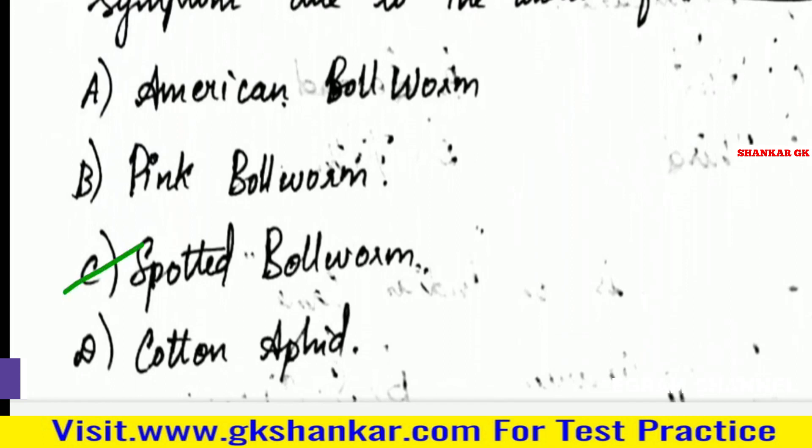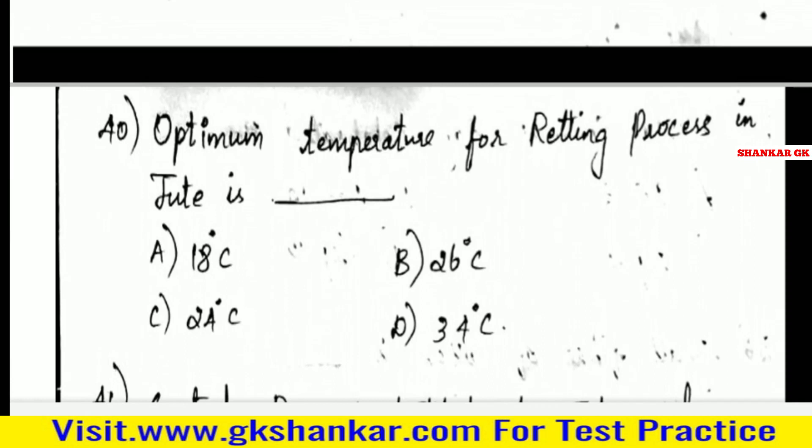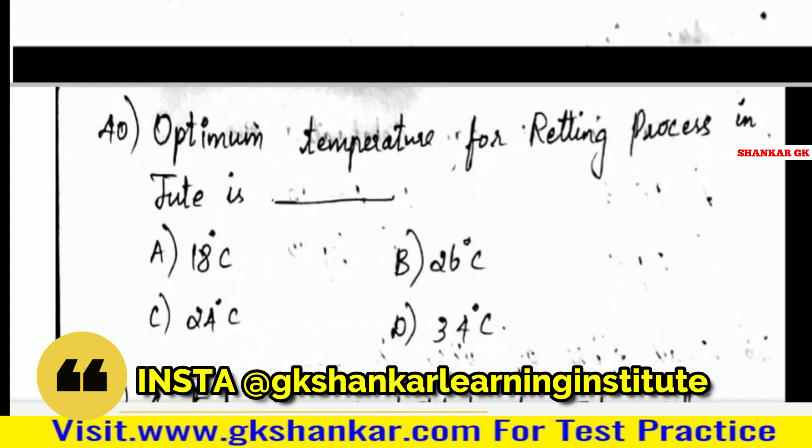Note: Flaring square of cotton is a specific symptom of spotted bollworm. Pink bollworm and American bollworm are also important entomology points to remember.